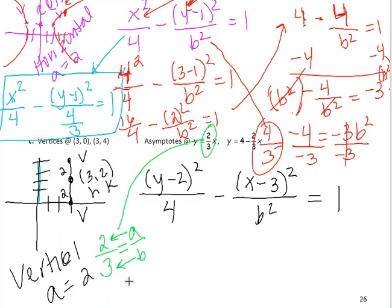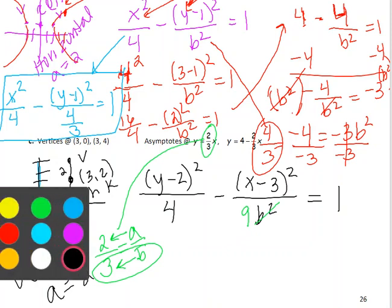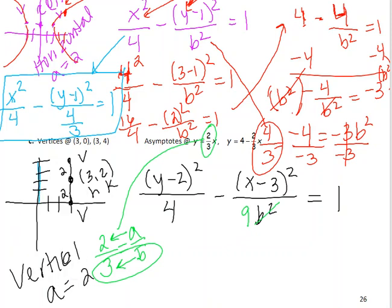So, since b is 3, you square it, and you put this as a 9, because 3 squared is 9. And then, I think what I'm going to do instead of just crossing it out, is I'm just going to erase it, and I'm going to put my 9 there. And then you're done.